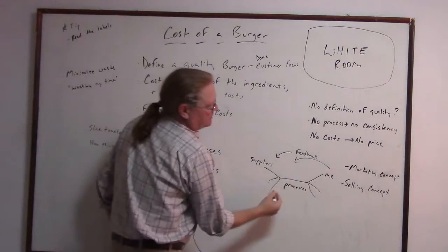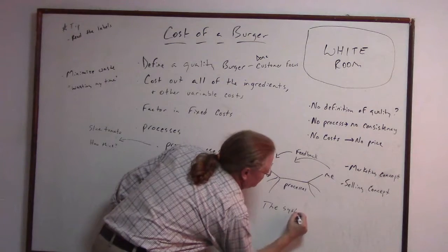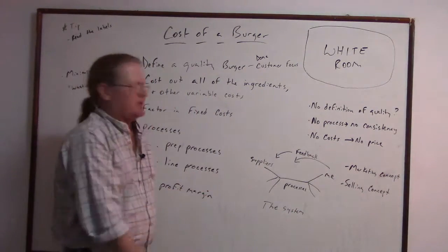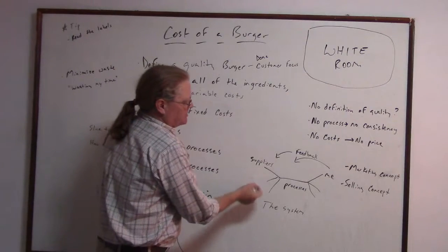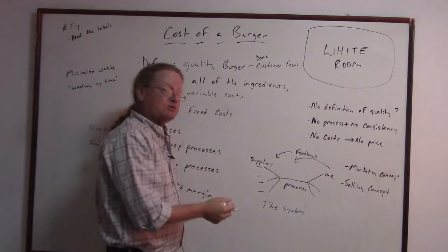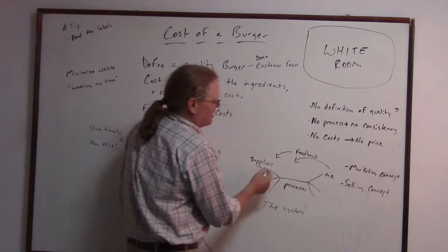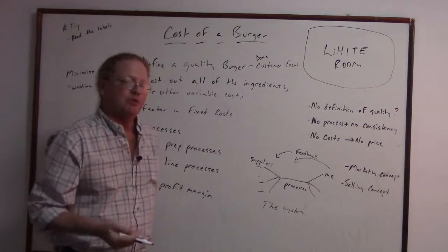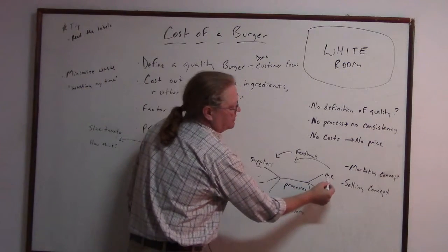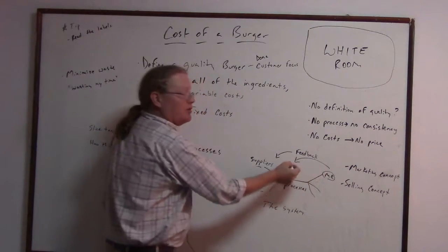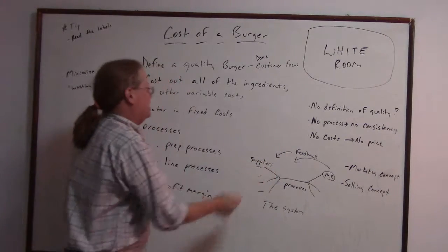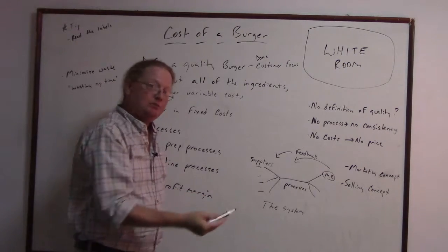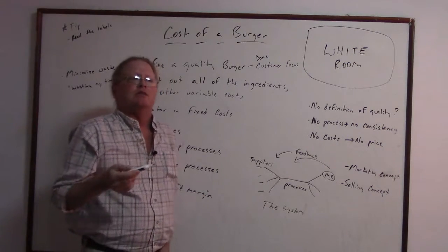When we look at the system here, which we've already covered — it's in almost every class — we have the suppliers over here of all of these things. You can tell me who your suppliers are. Then you get all the ingredients and you have the process of building the burger. The customer is me, and I've already built in the feedback for you. You might send feedback to the suppliers if need be.